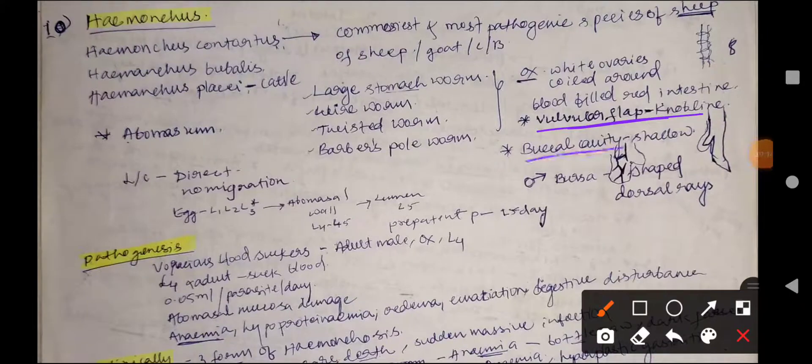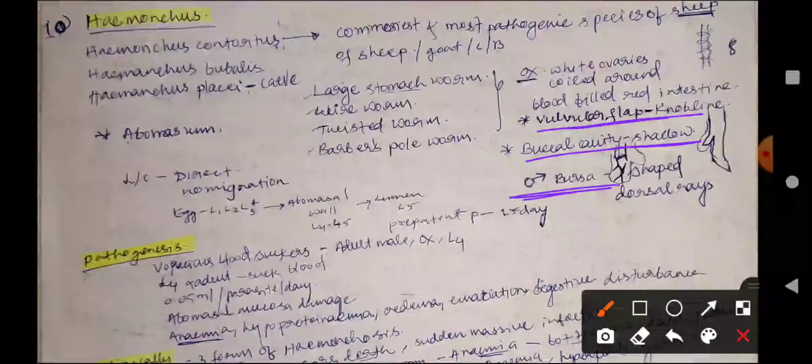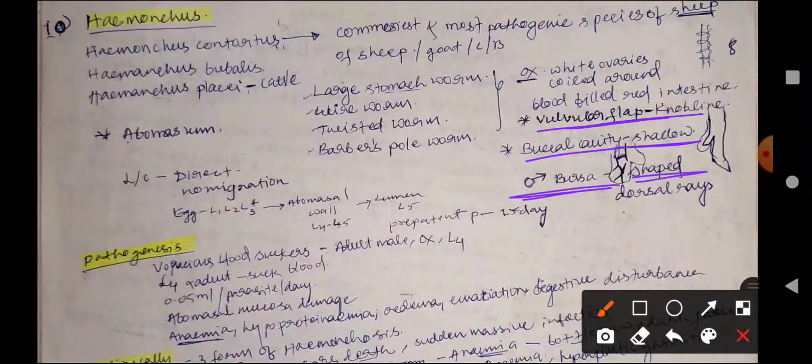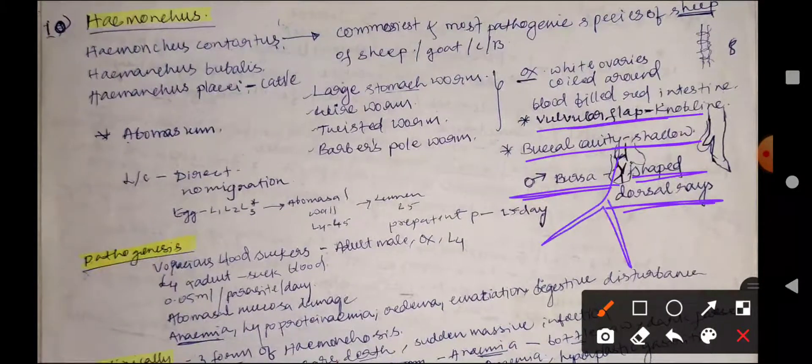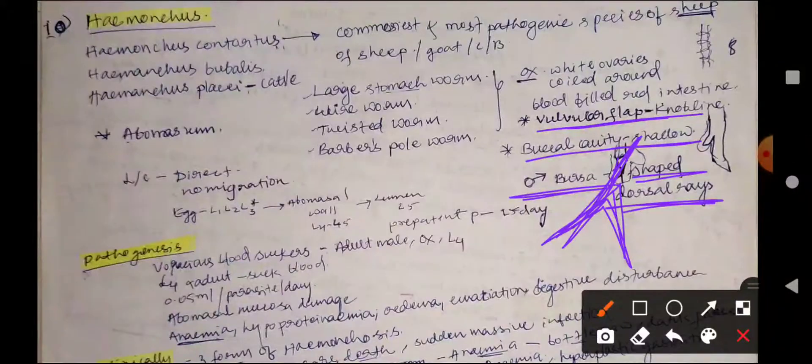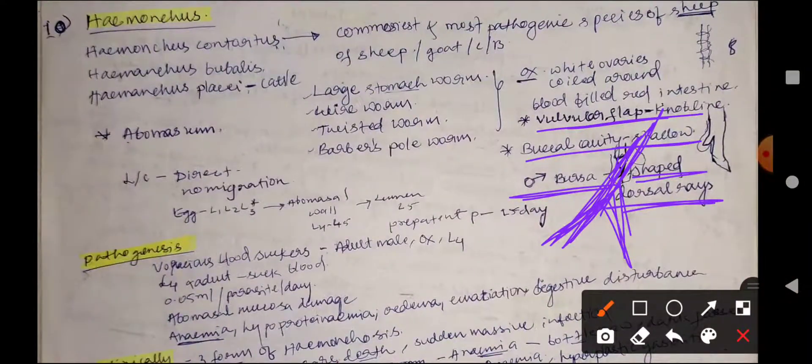The buccal cavity is shallow, and in the case of males, the bursa has dorsal rays in an inverted Y-shaped structure.